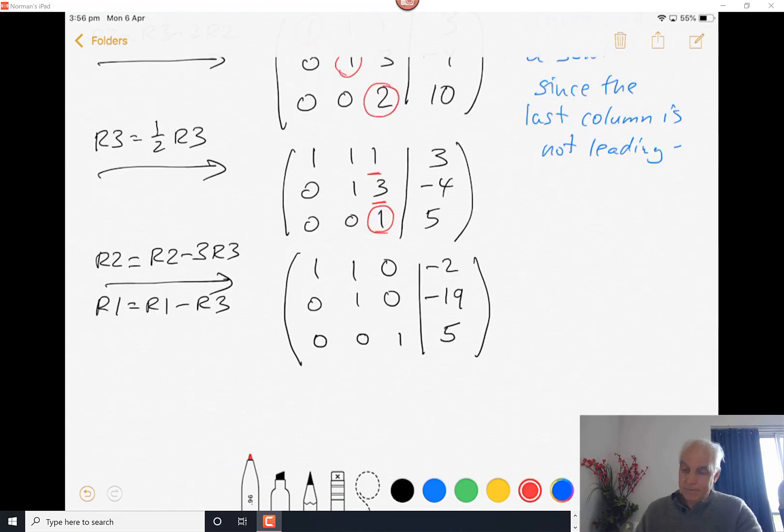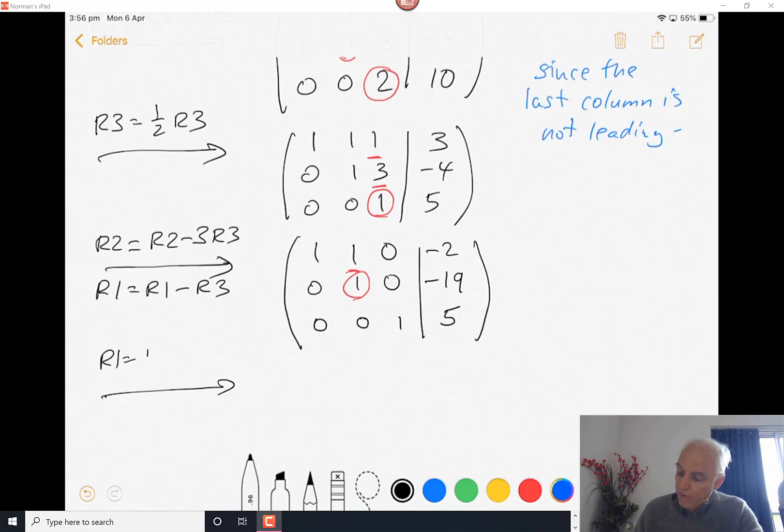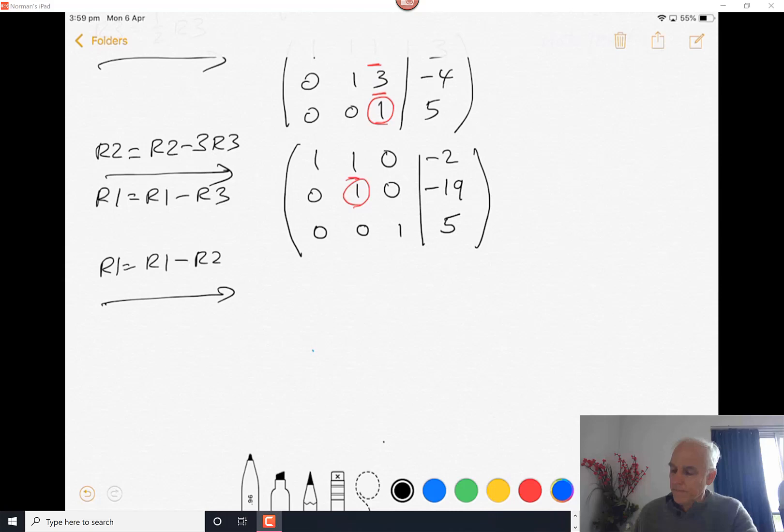And now our next pivot entry - we're going to go up one row to the second row, use that entry there to get rid of everything above it, to get rid of this 1 right here. So row 1 is going to be row 1 minus row 2. We get the bottom row stays where it is: 0, 0, 1, 5. The next row stays where it is: 0, 1, 0, minus 19. And the first row becomes - just subtract the second row - so we get 1, 0, 0, and minus 2 minus minus 19, that's minus 2 plus 19 which is 17.